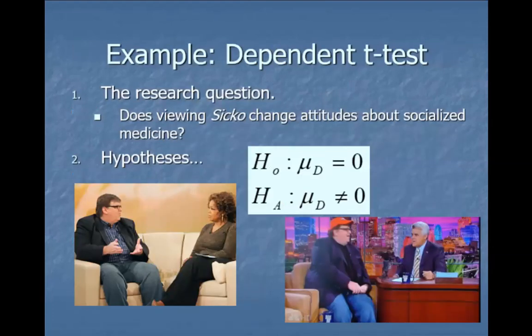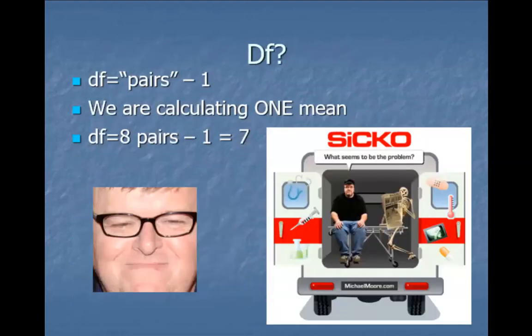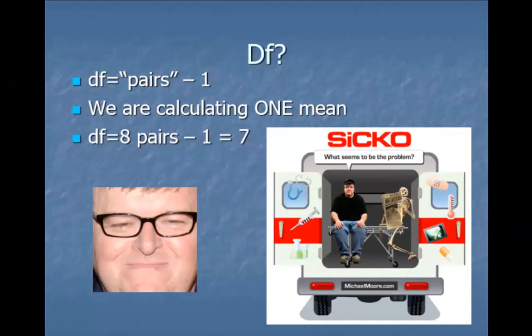Step three is where we define our rejection region, and we first calculate our degrees of freedom so we can read the table. It's going to be the pairs minus one — not the number of measurements, because we had 16 measurements (eight before and eight after). We're really interested in the units, so it's the number of pairs minus one. Since we had eight pairs of scores, it's eight minus one, which is seven. We only calculated one mean — the mean of the differences — so that's why we lose one degree of freedom.